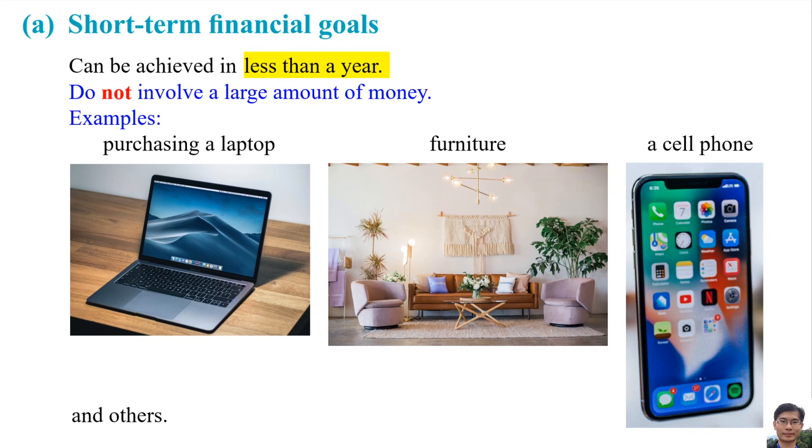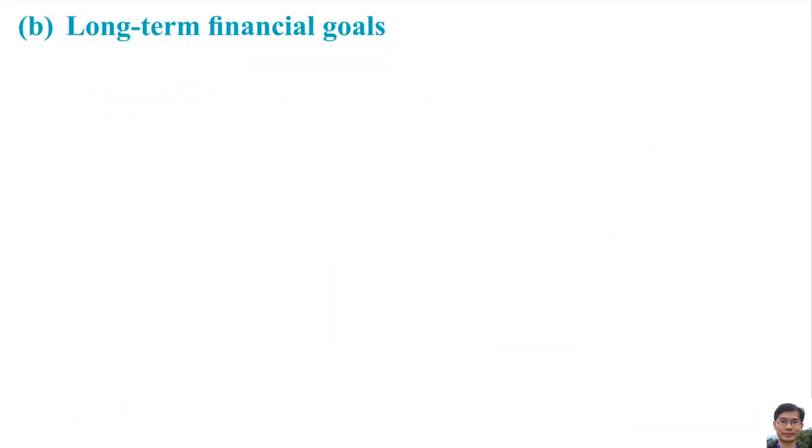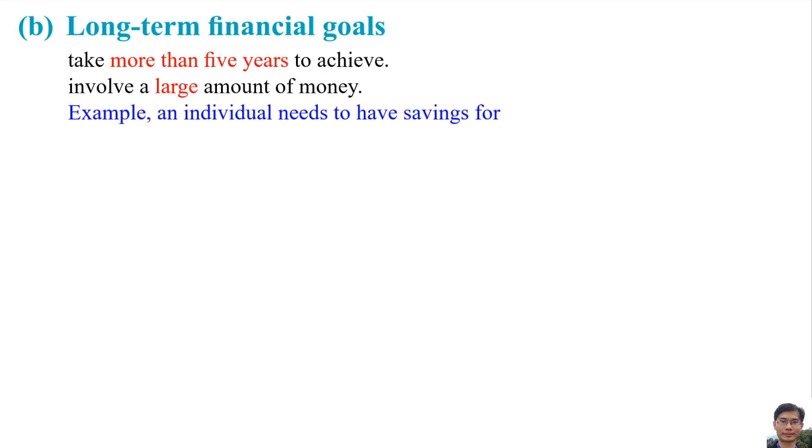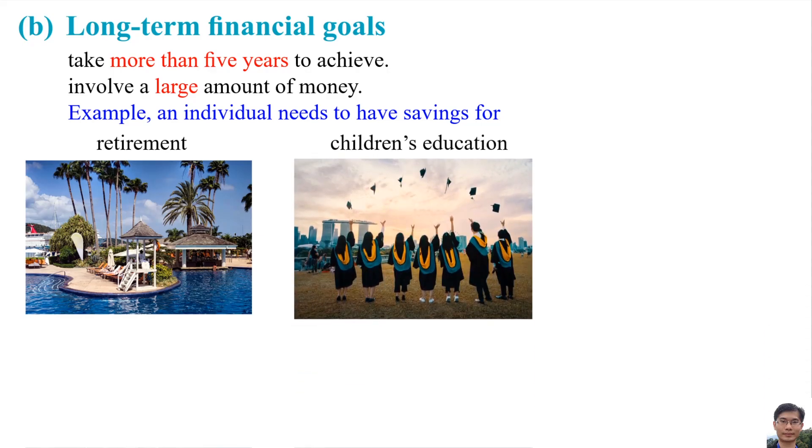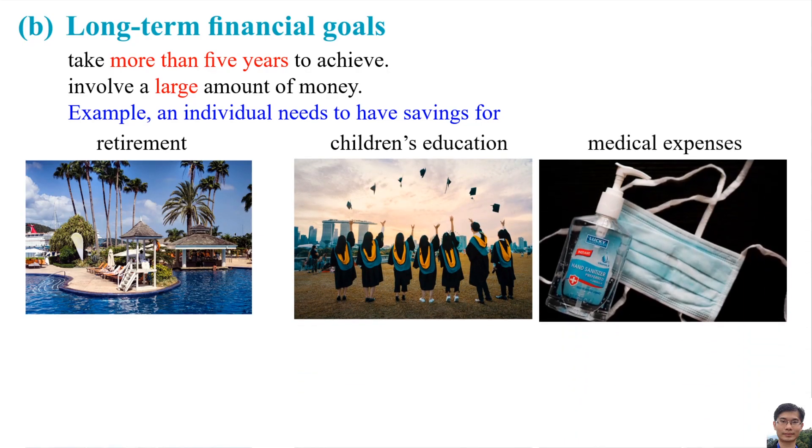The second type of financial goals is long-term financial goals. The long-term financial goals take more than 5 years to achieve and involve a large amount of money. For example, an individual needs to have savings for retirement, children's education, medical expenses, and others.